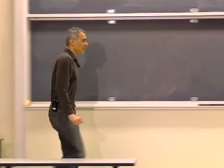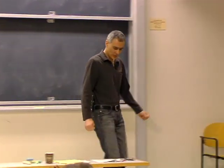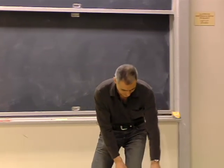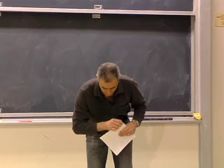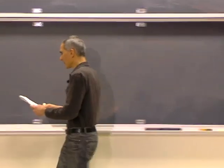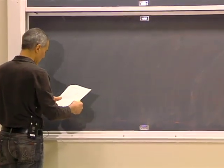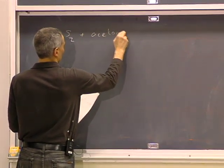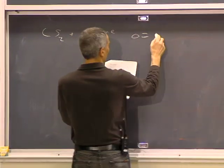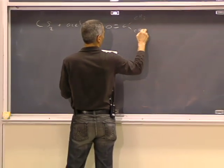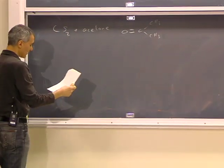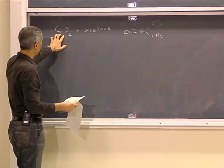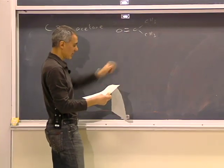So last time, you learned about the ideal solution limits with Henry's Law and Raoult's Law. I just want to start with one reminder of what this is all about. Let's say that you have a mixture of CS2 and acetone — acetone like this, CH3, CH3.